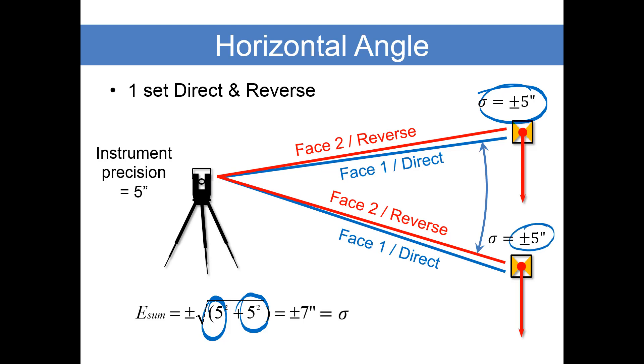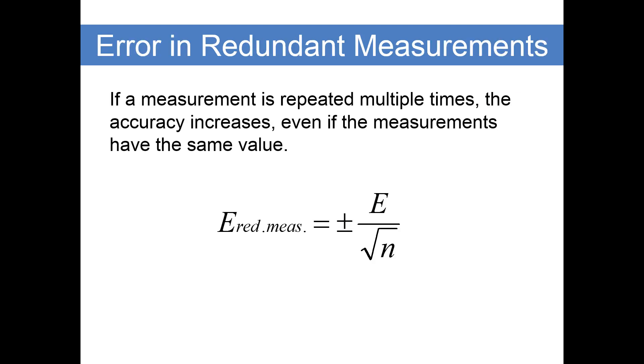The way we express that is by using the error of a sum. We've got 5 seconds at the backsight and 5 seconds at the foresight. These are unique errors at different locations. We take the square root of the sum of the squares and we get a standard deviation in this single angle measured in direct and reverse mode of 7 seconds.